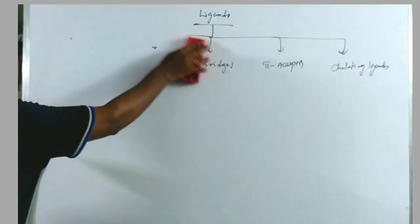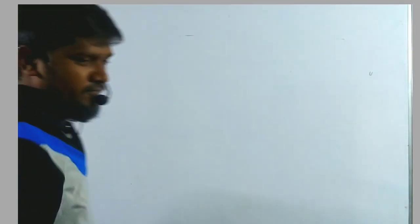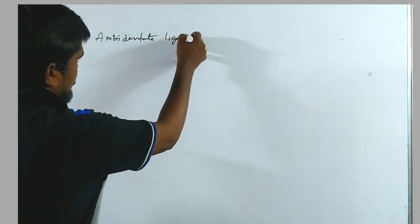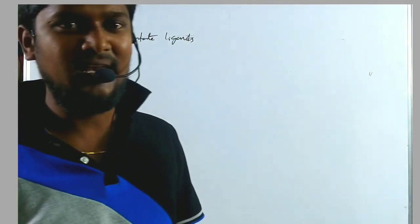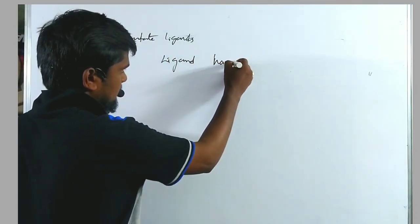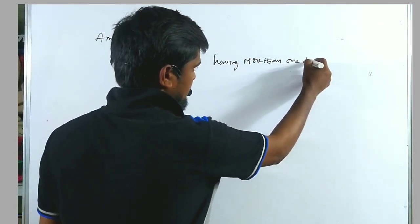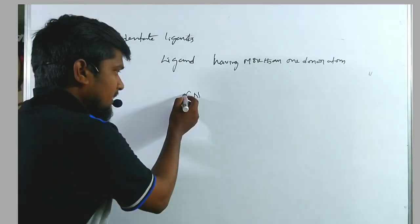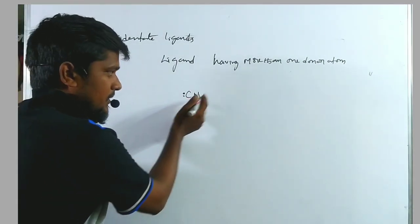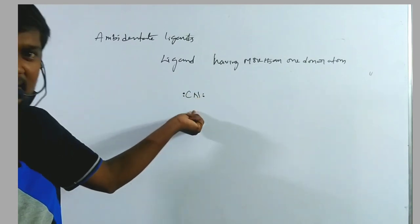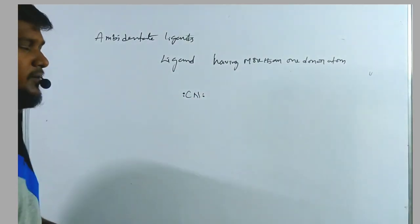The first one is ambidentate ligands. Ambidentate means it is similar to the frog — a frog having a dual nature, like an amphoteric nature. That's why 'ambidentate' comes from amphoteric nature. Ambidentate ligands means a single ligand having more than one donor atom. For example, CN — it is a ligand, but it donates the electron pair from carbon and from nitrogen also. Ligand is a single one, but the donor atoms are more than one; here donor atoms are two.